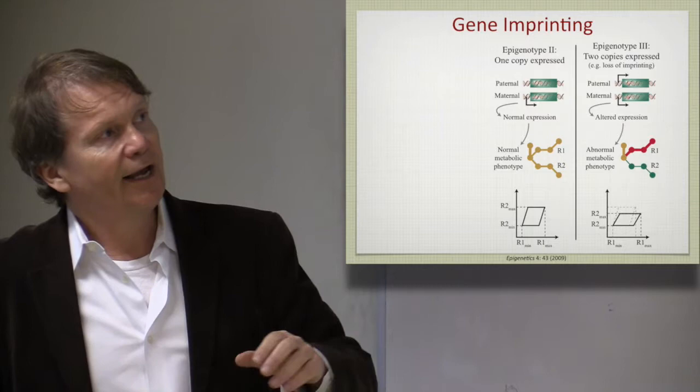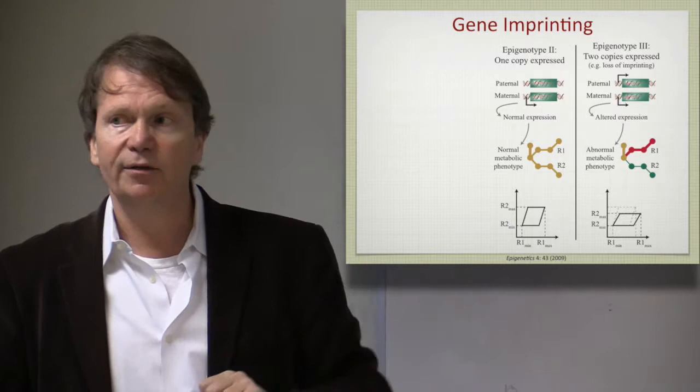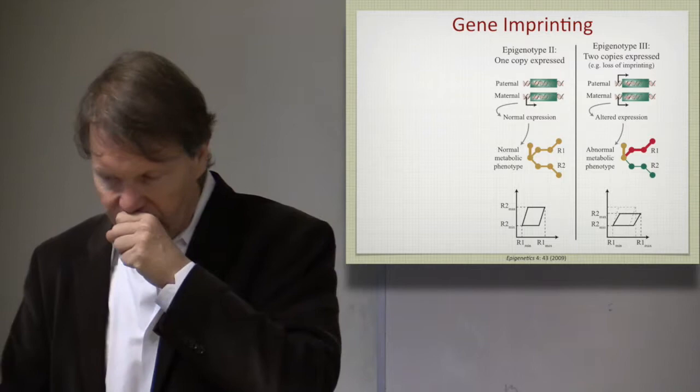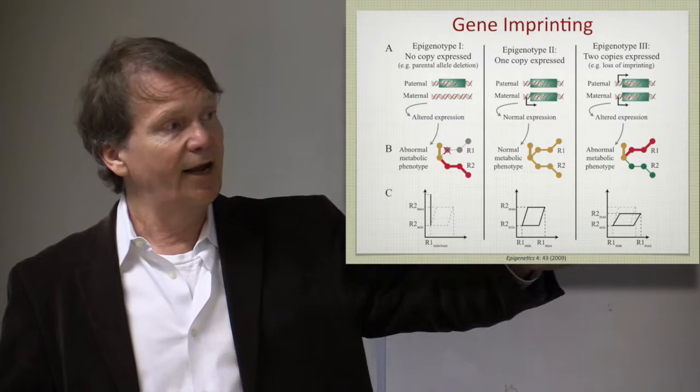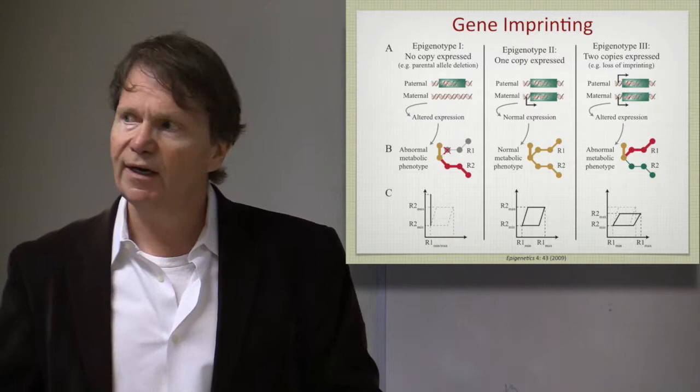Here would be what's called an epigenotype 2, where a loss of imprinting has happened, and now the gene dosage basically doubles. Now you have much more of this protein around, and you can predict based on that, that some pathways may now be more active as a result of that. And the FVA swath changes a little bit in shape. And then you can look at the opposite, where you actually lose the expression of that one allele that was active, and then you have a substantial effect on that FVA envelope.